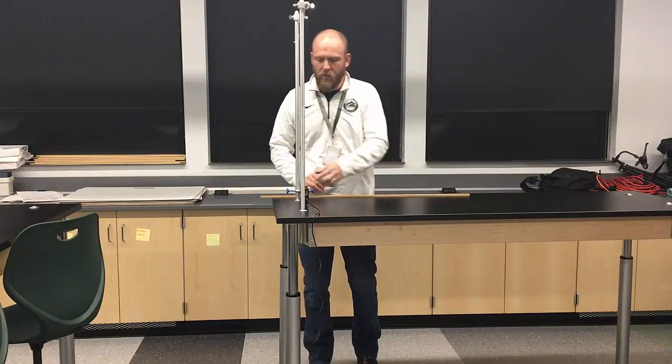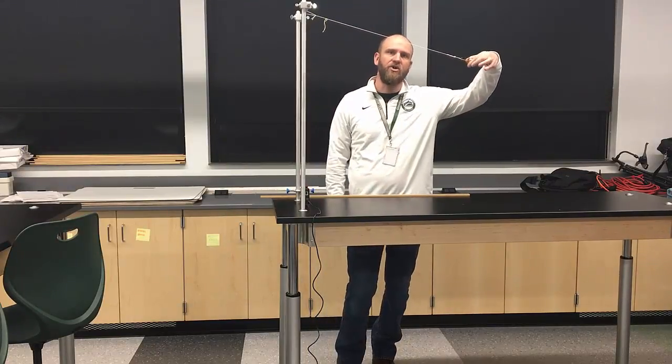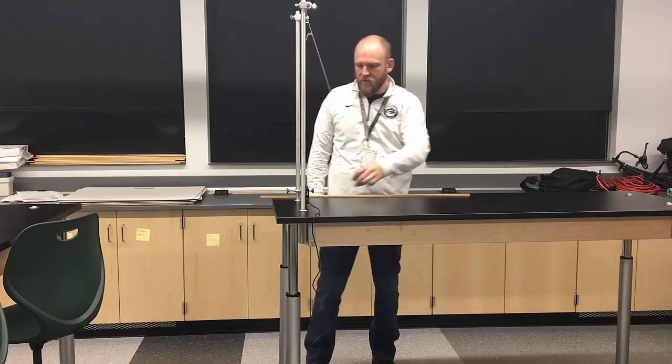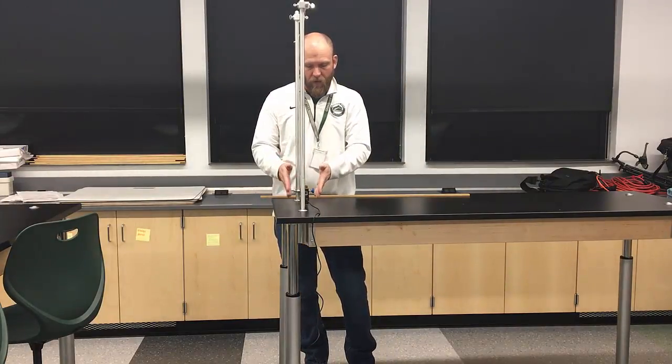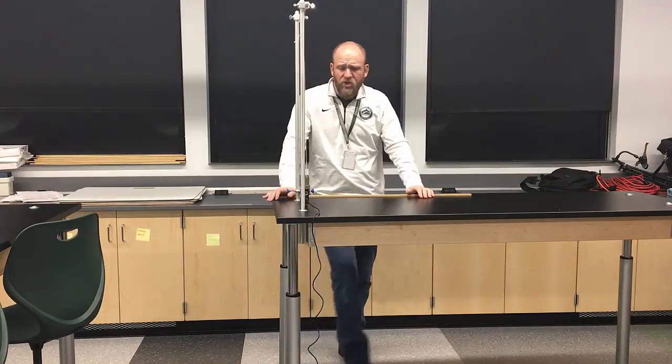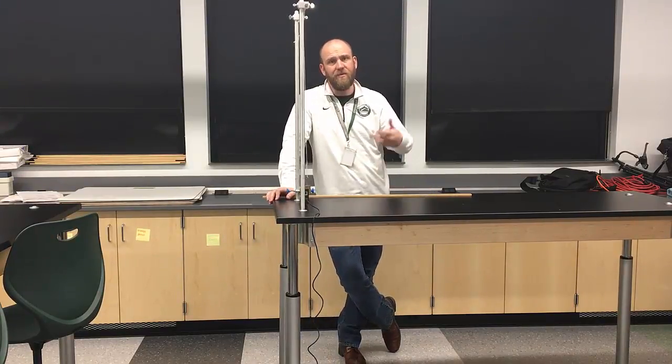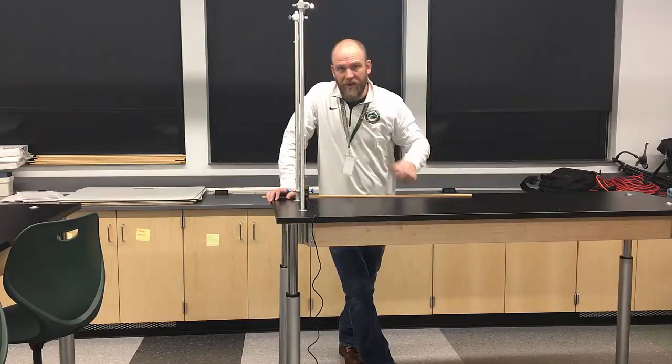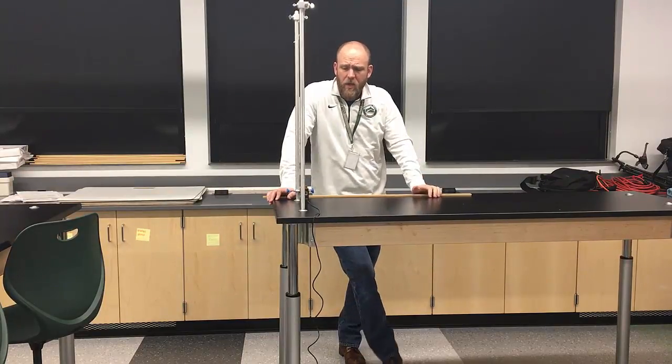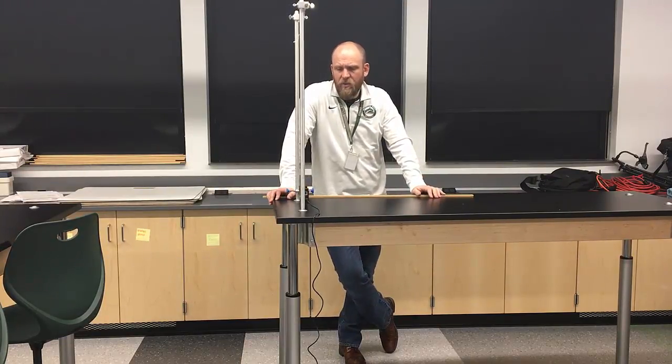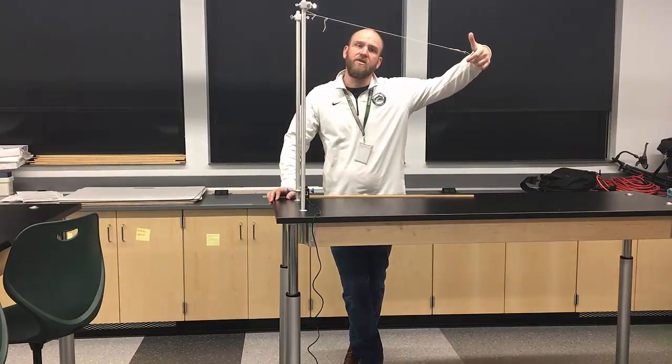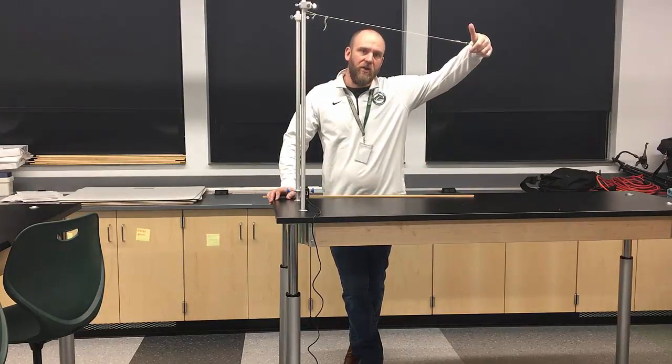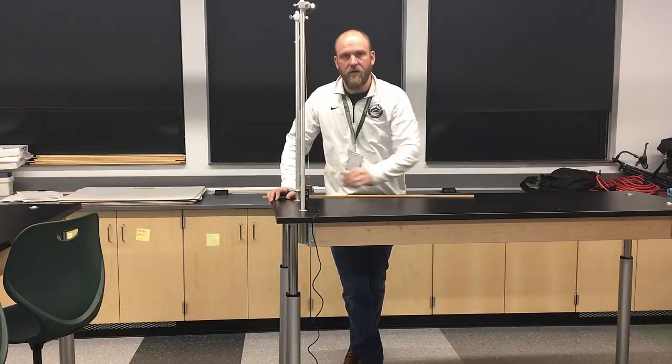So what we'll do from there is we simply want to make sure that we're comparing the total energy at this point before dropping to the total energy here where it's slightly above the table and also moving right here at the bottom. Your job will be to perform this three separate times based on your three unique drop heights, and then you're going to do some analysis to determine if energy was in fact conserved. Theoretically, we know that energy is conserved, and we should have an energy up here that is equivalent to the total energy down here.